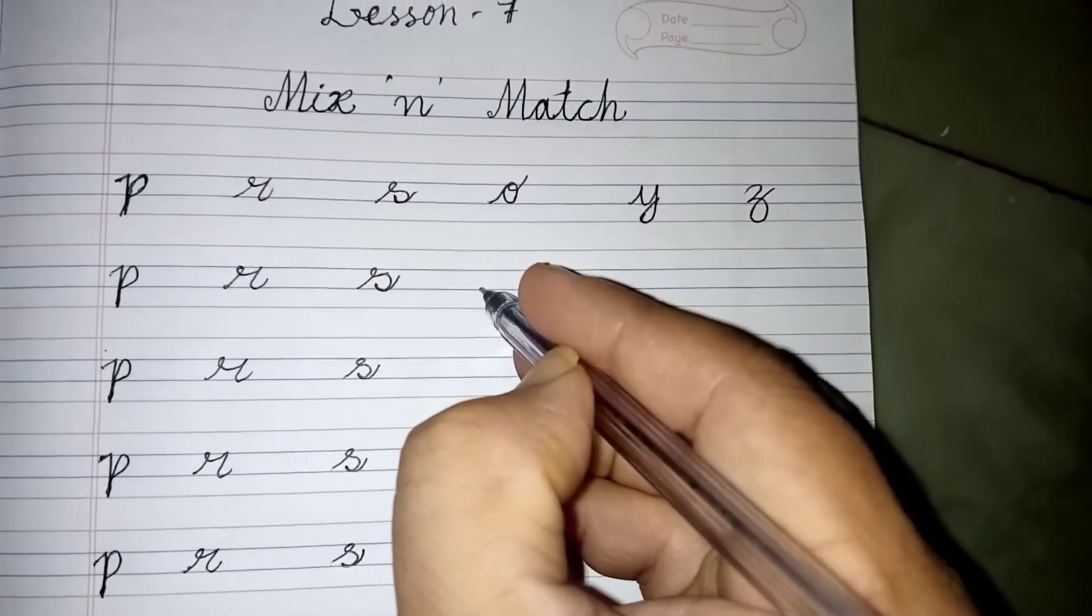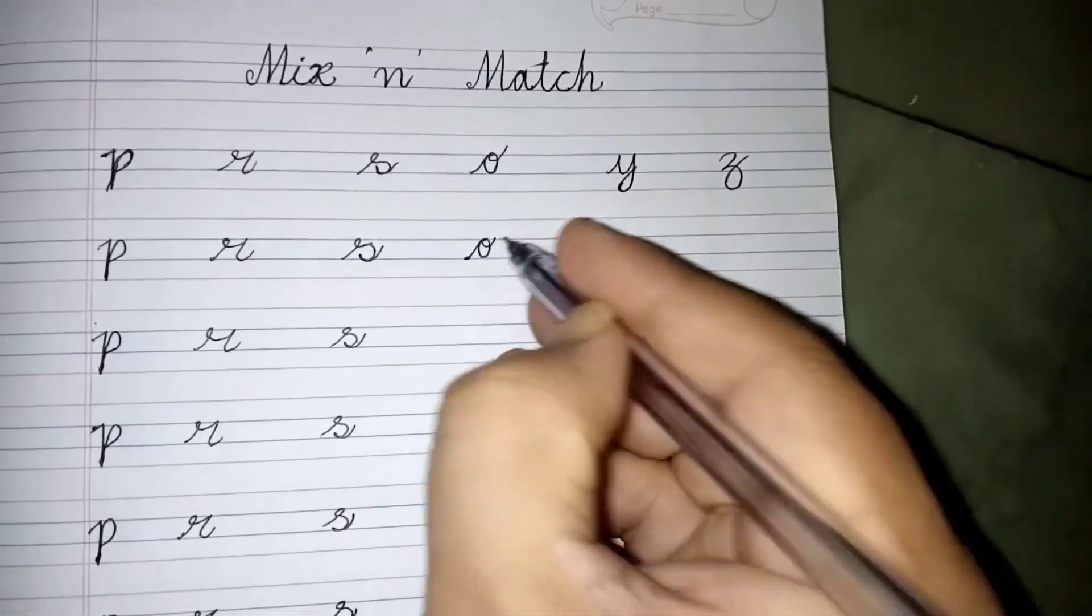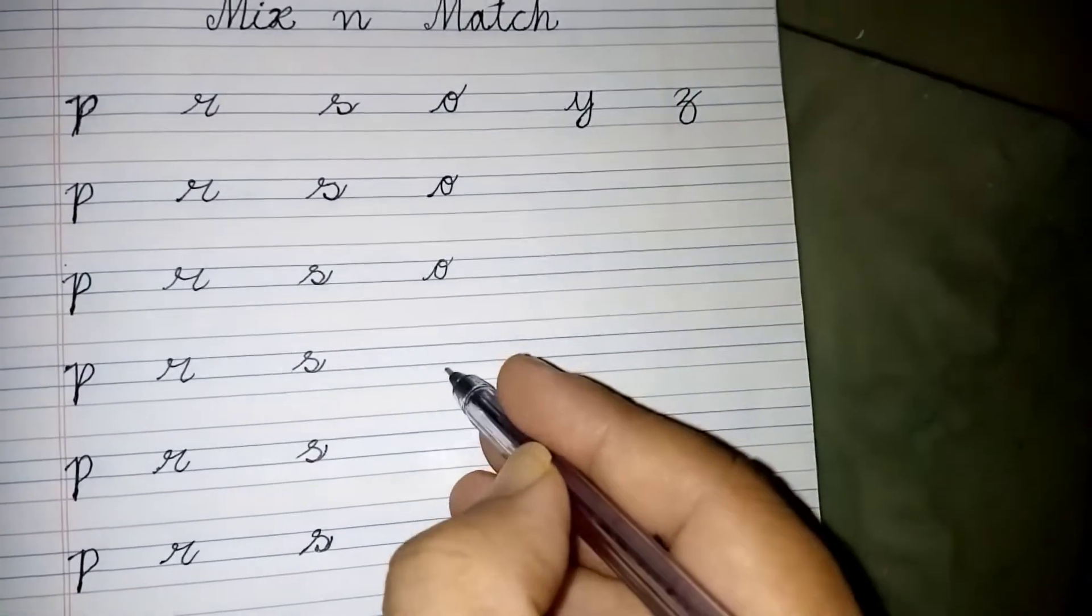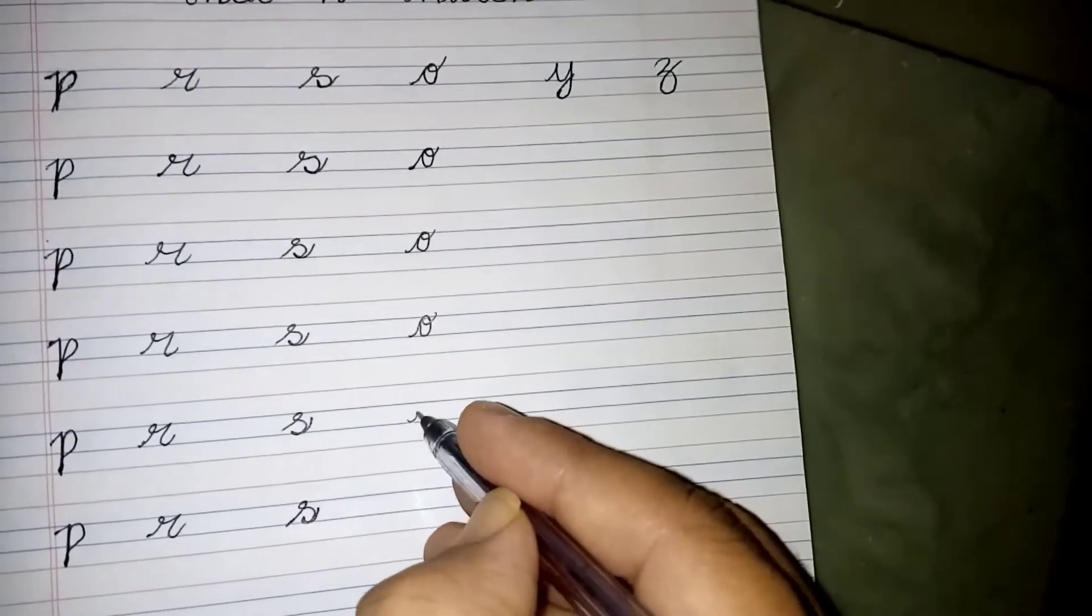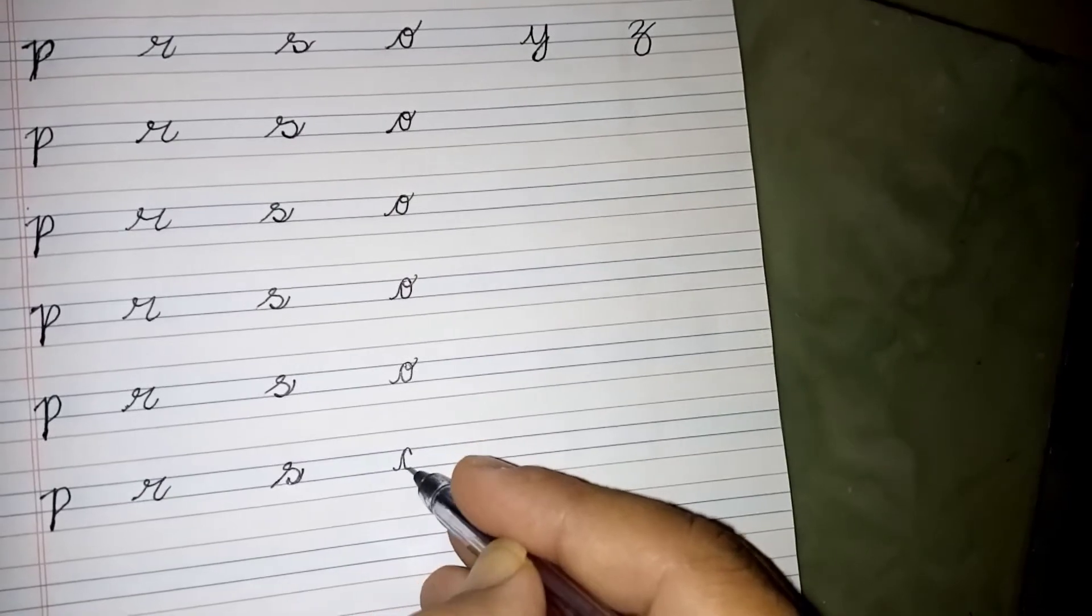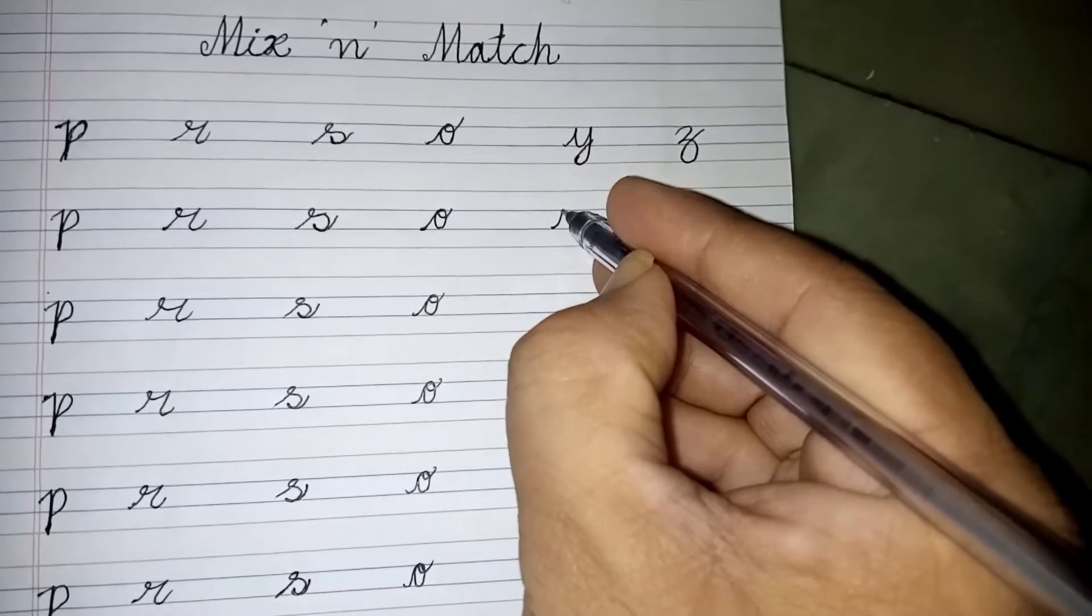Now let's move to the next mix and match letter. It's o. It starts from here. O, it goes in this manner.